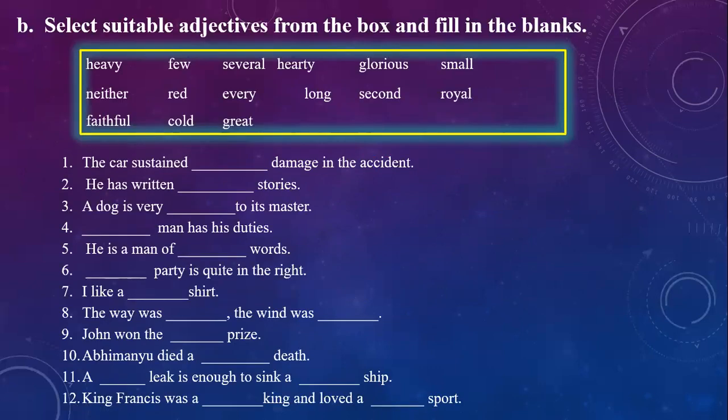Select suitable adjectives from the box and fill in the blanks. The words given are: heavy, neither, faithful, few, red, cold, several, every, great, hearty, long, glorious, second, small, royal. Heavy means great weight. Neither means none. Faithful means loyal. Glorious means high quality, especially related to royalty.